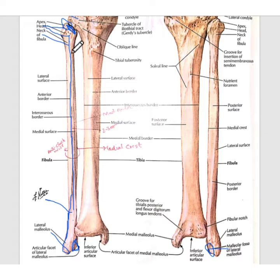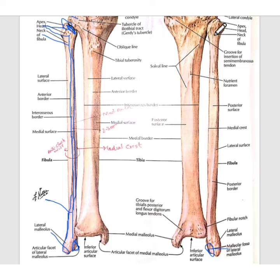Its medial border starts just medial to this anterior border and moves along it, ending just above this articulating facet. The third and last border is the posterior border. Its posterior border starts above from this styloid process, then moves downward, and ends just behind this lateral malleolus.